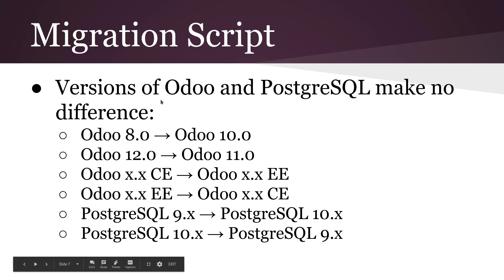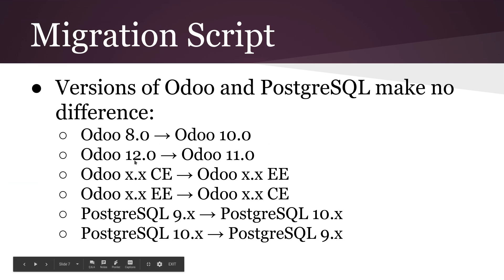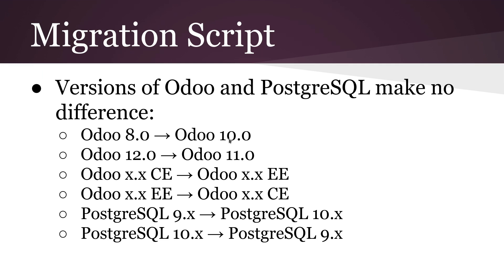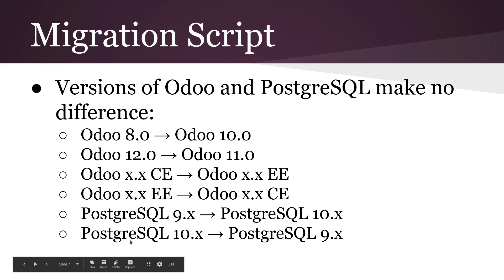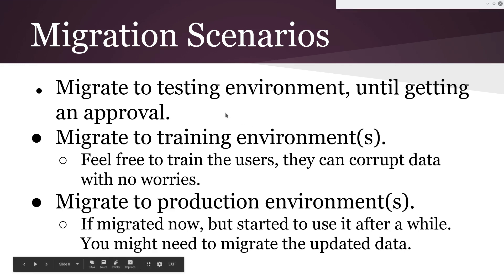Versions of Odoo and Postgres make no difference. For example, you can migrate from version 8 directly to 10, 11, 12, or 13. Odoo 12 to Odoo 11 is also possible — as mentioned, you might have a good reason to downgrade. Odoo community to enterprise and enterprise to community are both supported. Upgrading Postgres from version 9 to 10, or 10 to 9, is also possible.